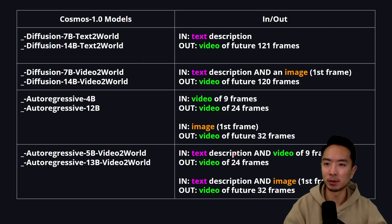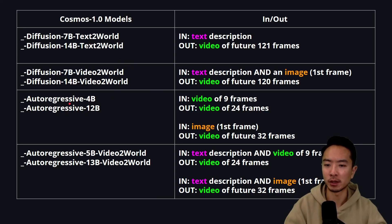Here's a summary of all the Cosmos 1.0 models — both the Diffusion Text-to-World, Diffusion Video-to-World, and the Autoregressive Video-to-World versions.